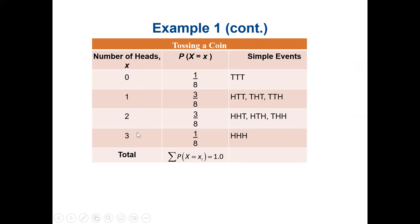The probability of getting all three tosses as heads — HHH — is only one outcome. When we add all probabilities: one over eight plus three over eight plus three over eight plus one over eight, the answer is one. This satisfies both characteristics: all probabilities are between zero and one, and they sum to one.